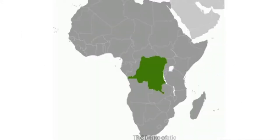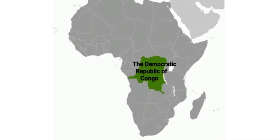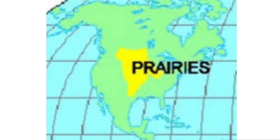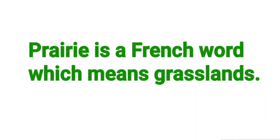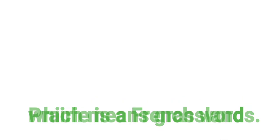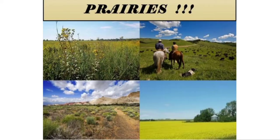About savannas, we have already studied in the chapter on the Democratic Republic of Congo. In this chapter, we will be focusing on prairies. Prairies is a French word which means grasslands, so everything we will be talking about will be related to prairies — grasslands — in this chapter.